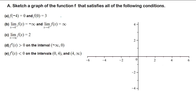So (-4, 0) is a point on the graph, and (0, 3) is also a point on the graph. Let's look at those two points: negative 4, 0 is here, and 0, 3 — going up 1, 2, 3 — it should pass through this point as well.